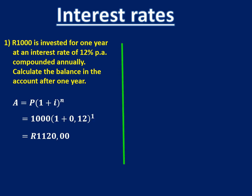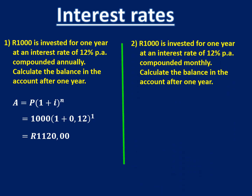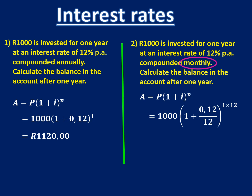Let's try exactly the same example, but this time we are going to compound monthly. We're still dealing with compound interest, but because we're compounding monthly, we take our interest rate and divide by 12, and we take one year and multiply by 12. Typing that into the calculator, we end up with 1,126 Rand and 83 cents.